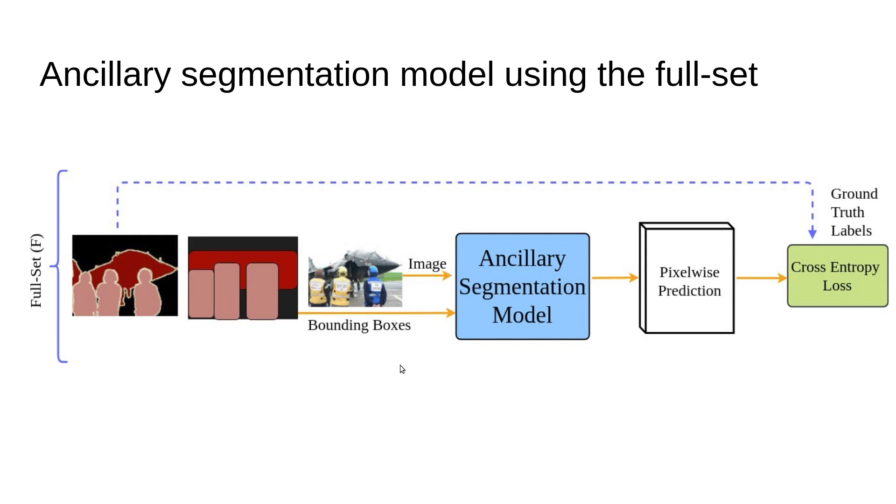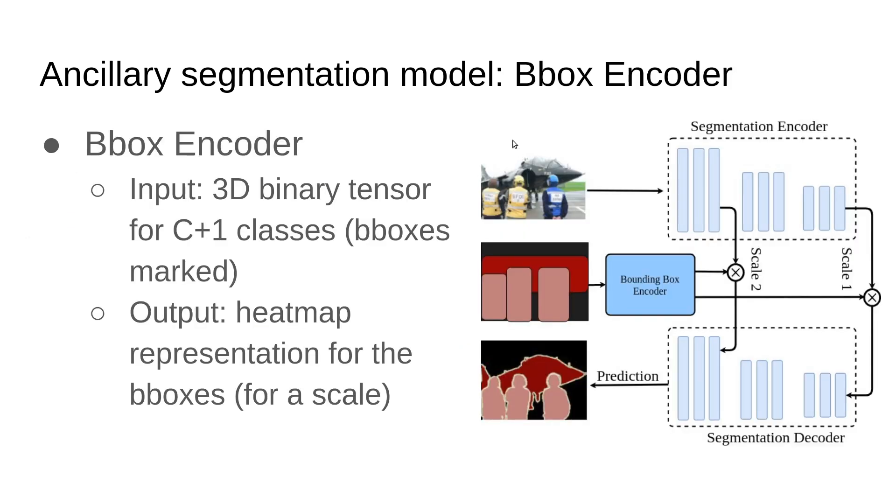The network takes an image input and also bounding boxes input and learns pixel-wise prediction for this image through standard cross-entropy. For the bounding box encoder, we design a very simple network that takes an input 3D tensor for the binary classes of C+1 classes—C for the objects and one for the background—and then encode them more like a heatmap image and inject it on several scales on the network.